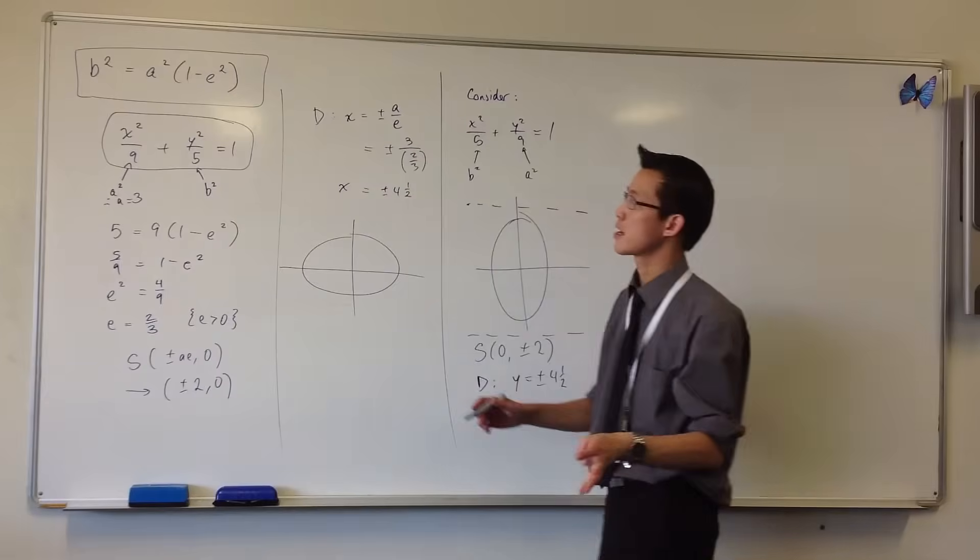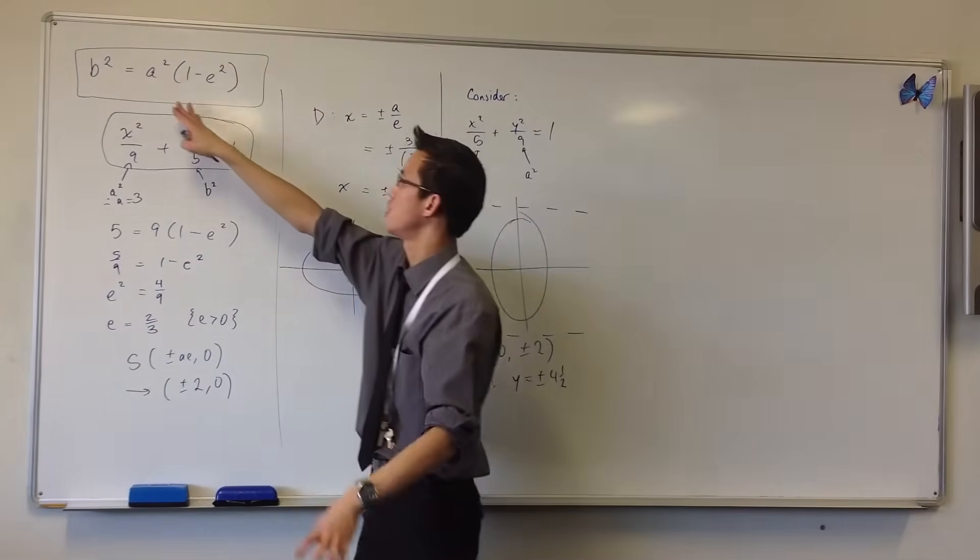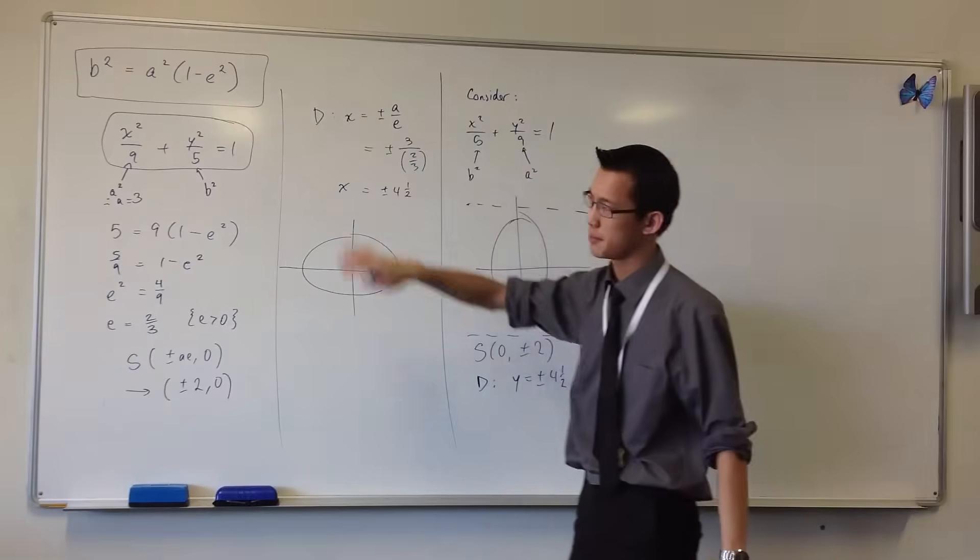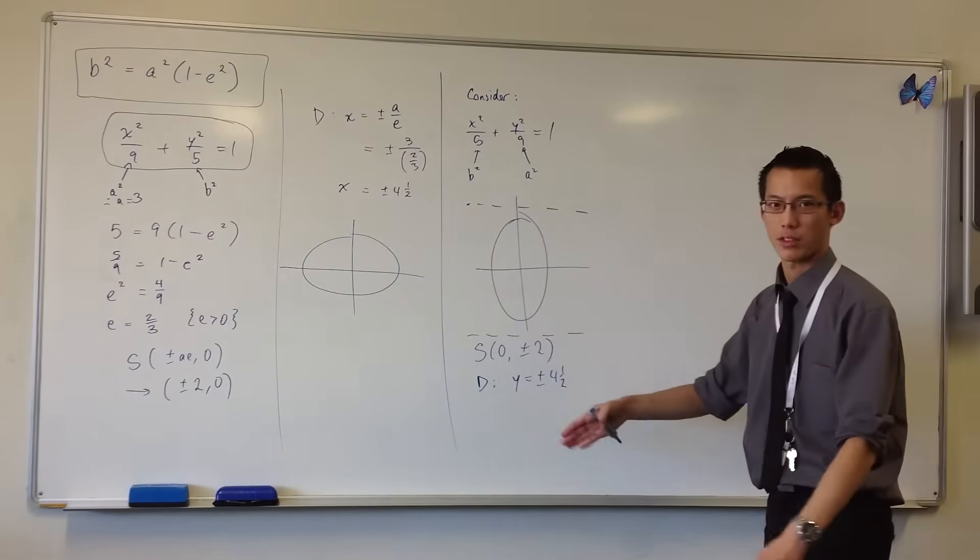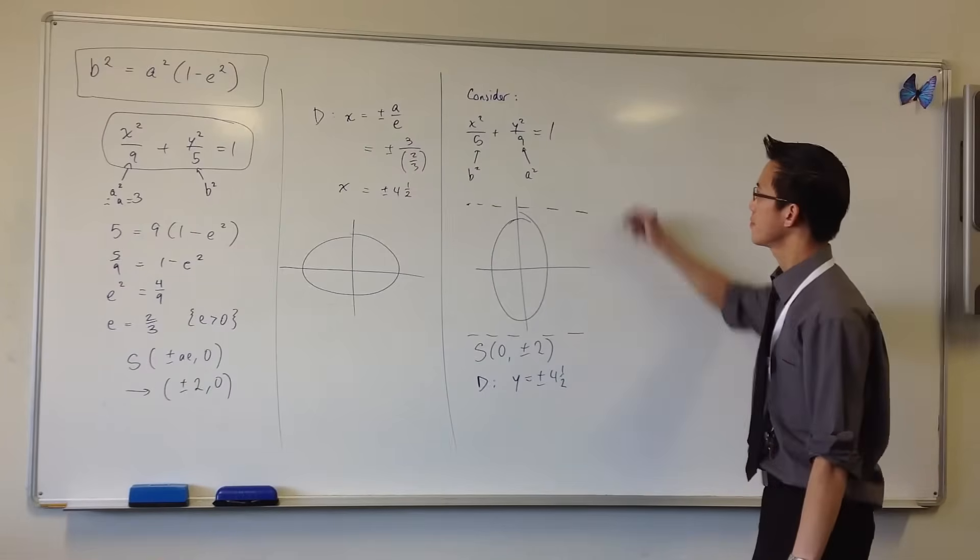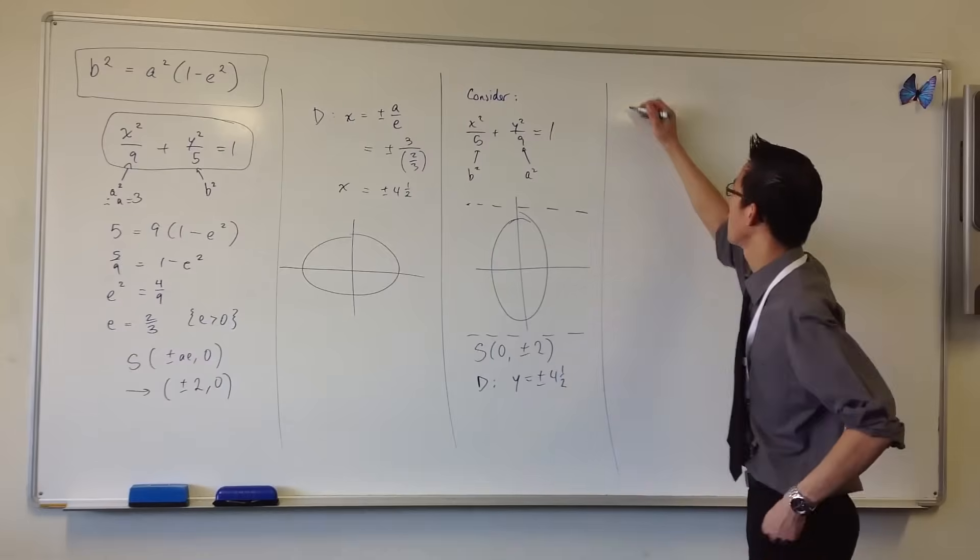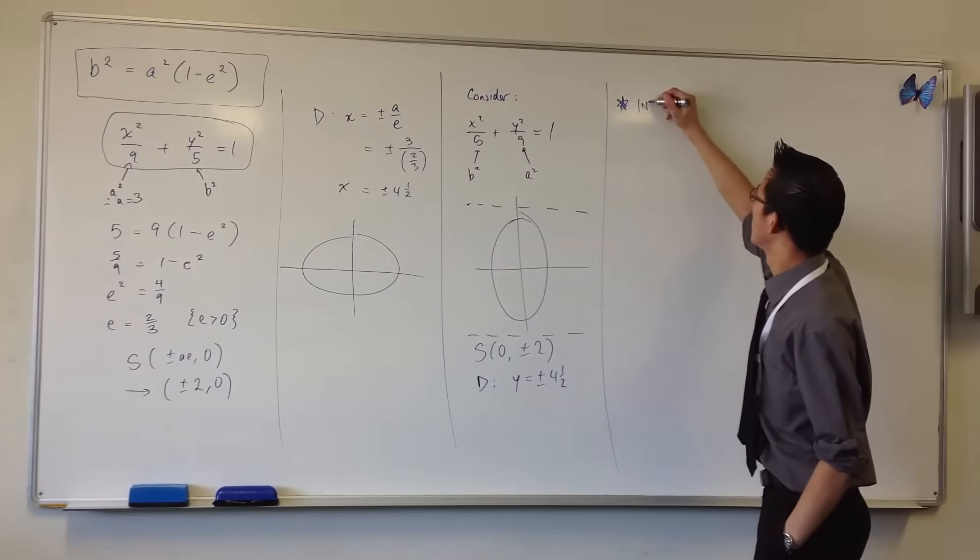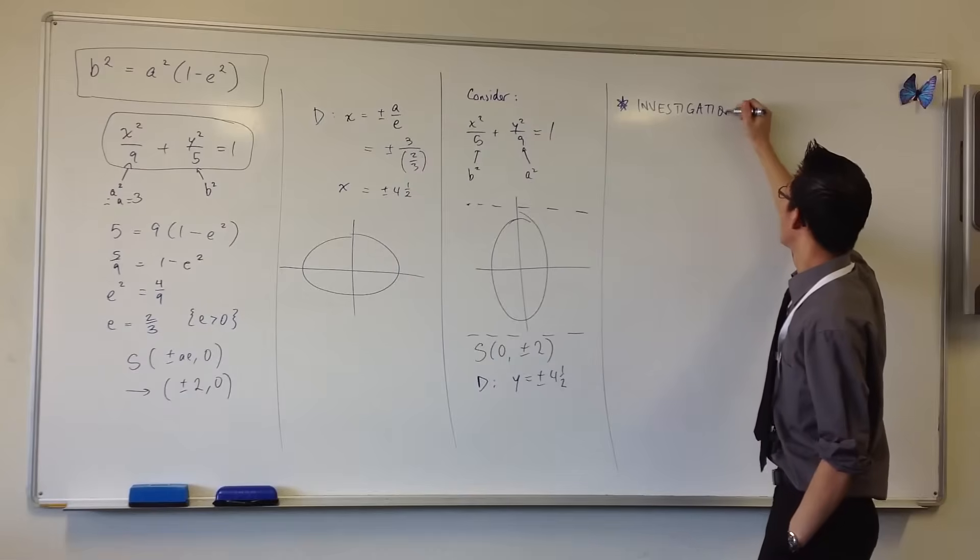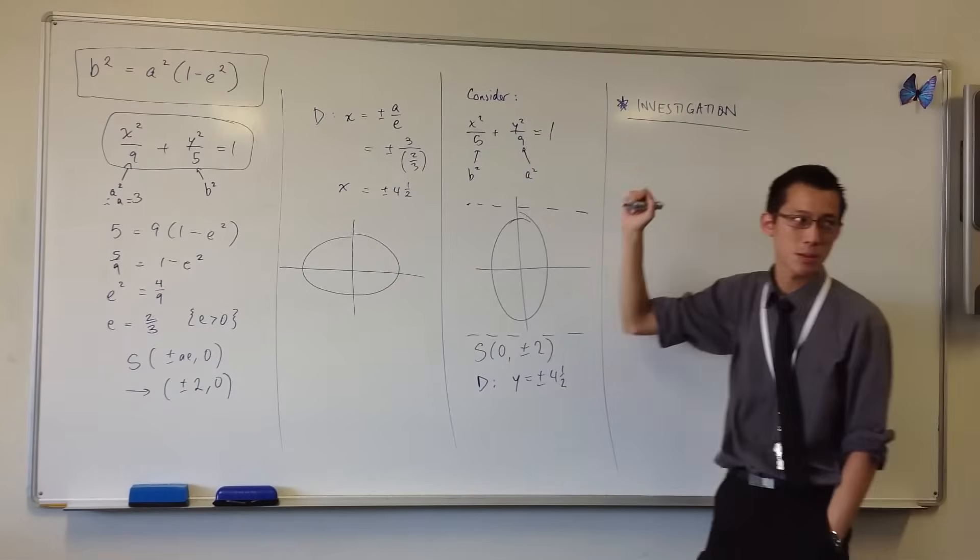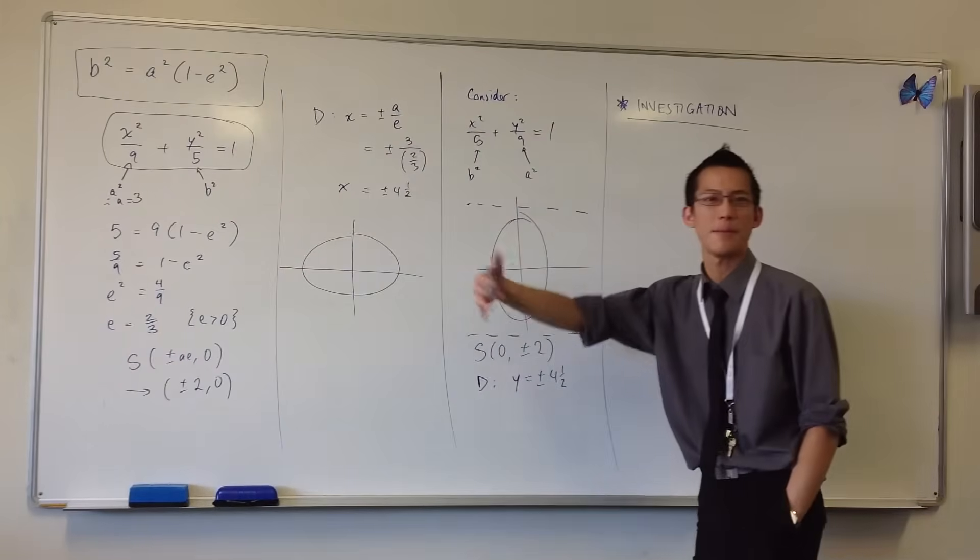So that's how you can take a standard form equation ellipse, use this relationship b² equals a²(1 minus e²) and get out the main features: focus, directrix and so on. Now all of that's pretty pedestrian to be honest. We want to do some investigation.